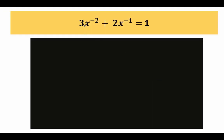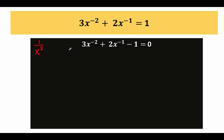Let's go to the second problem: given 3x raised to negative 2 plus 2x raised to negative 1 equals 1, solve for x. The first thing we do is write this in standard form where the right side equals 0. Then let's convert our negative exponents to positive exponents — or as another way of saying it, let's change our negative attitude about negative exponents into a positive attitude. We retain 3 in the numerator, and x raised to negative 2 becomes 1 over x squared, giving us 3 over x squared.